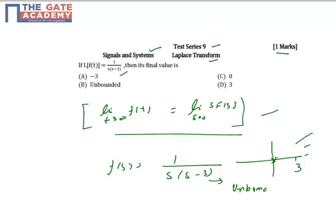So unbounded system will have an infinity value at infinity. Steady state value will be infinity. System will tend toward infinity. So basically it's an unbounded system, so option B is the answer. We cannot apply final value theorem over an unbounded system.